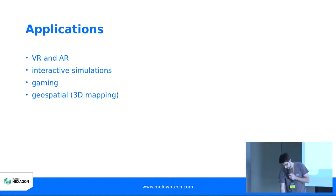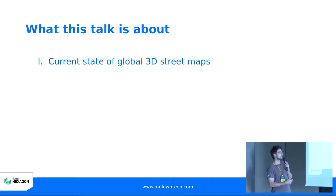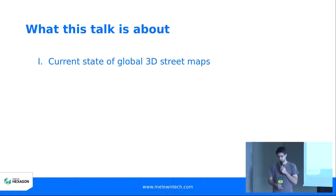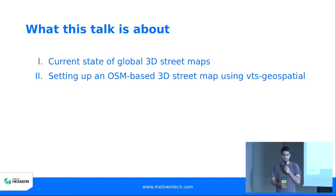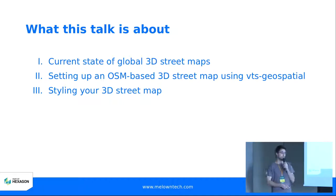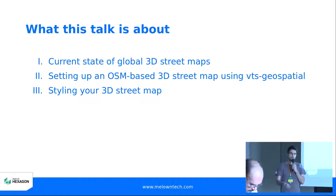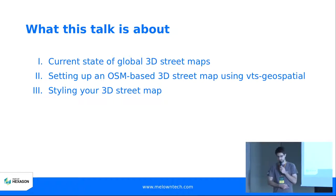So what we are going to talk about now: we'll take a look at the current state of global 3D maps, how to set up an open OSM-based 3D street map using VTS Geospatial, and we'll take a glimpse at how to style your 3D street map. If you find the last part a bit over the top, don't worry — everything is on GitHub. You just need to fork a repo and you'll get the whole web page and web application running with just one fork.